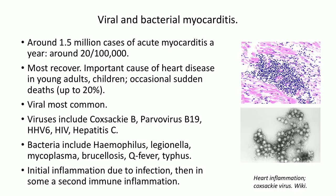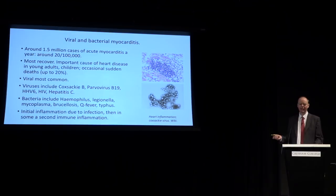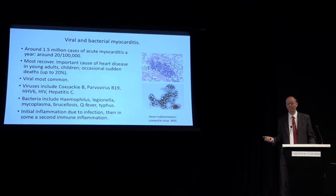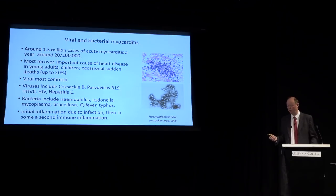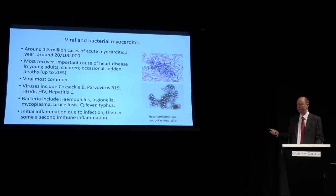Myocarditis — inflammation of the heart muscle — is most commonly caused by viruses, though a few bacteria can also cause it. The great majority of people who get myocarditis will make a full recovery, many not even knowing they've had it. But in some, particularly young adults, it can cause really bad inflammation. Up to 20% of sudden deaths not due to accidents — just the heart stopping — will be due to myocarditis. You can get inflammation during the infection and again several weeks later as an immune response.